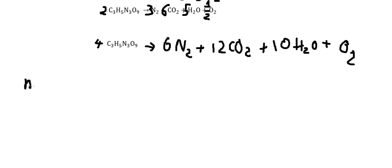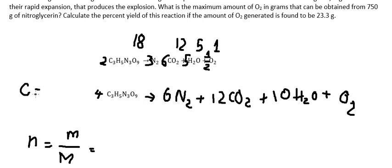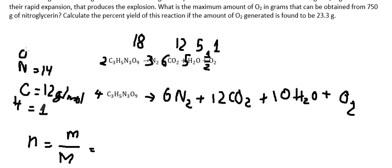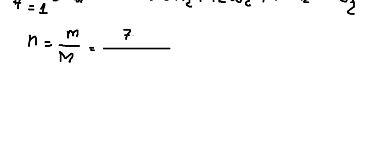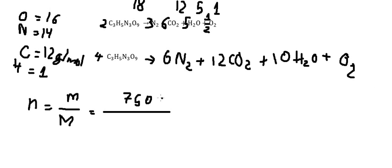We need to find the moles of nitroglycerin, so that should be the mass divided by the molar mass. Carbon is about 12 grams per mole, nitrogen is about 14, and oxygen is about 16. The total mass is 750 grams, and nitroglycerin has 3 carbons: 12 multiplied by 3.